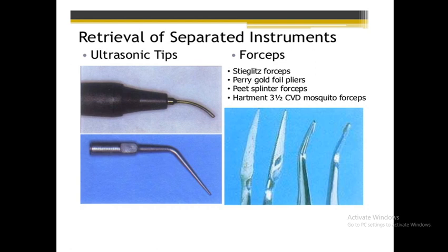We take an X-ray to determine the position of the broken instrument or file. Here you can see the mosquito forceps, which is used — if you can see the file clearly in the canal, you can remove it with these mosquito forceps.